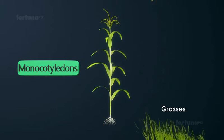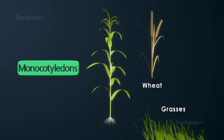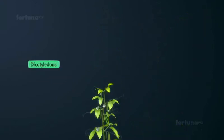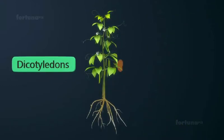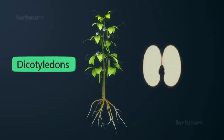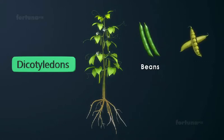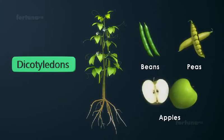Grasses, wheat, and sugarcane are all Monocotyledons. Dicot plants have two cotyledons in their seeds and include beans, peas, and apples.